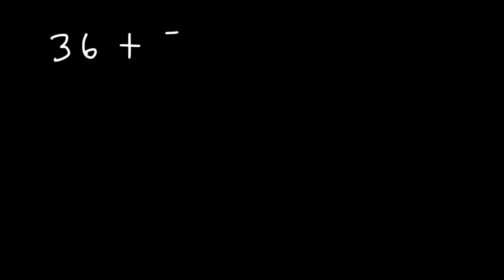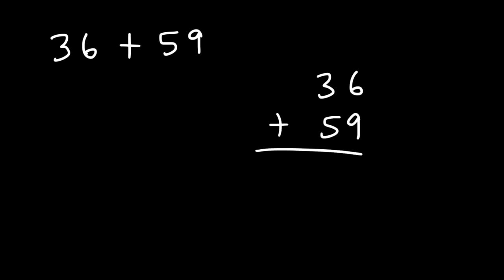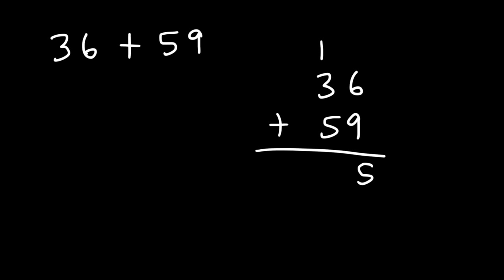Let's try another example: 36 plus 59. Feel free to pause the video to work it out. So 9 plus 6 is 15 — write the 5, carry over the 1. Then we add 1 plus 3 plus 5: 1 plus 3 is 4, and 4 plus 5 is 9. So this gives us 95.